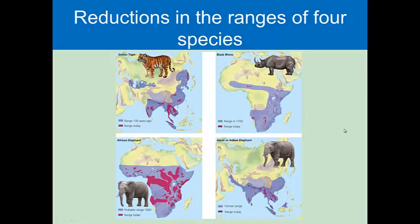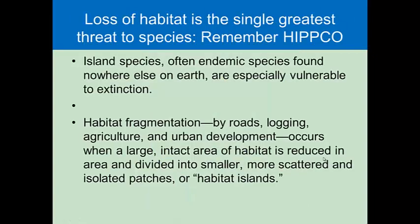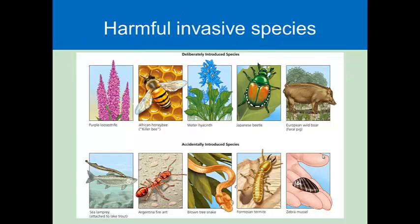Right here we have a demonstration of how reductions of species of some of the great mammals of Africa and Asia have occurred. We just spoke about fragmentation and island species.